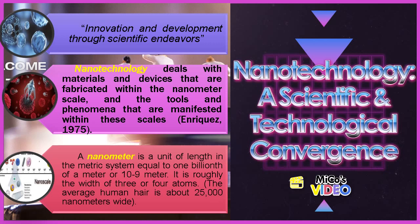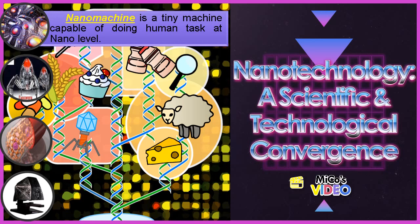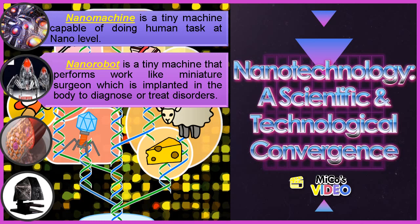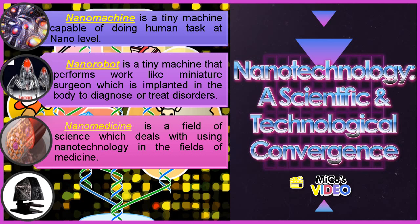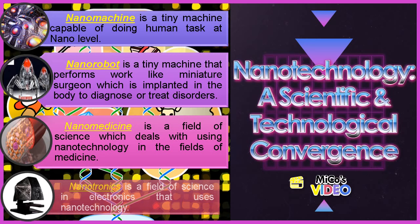Let's get familiarized with some technical terms about nanotechnology. First, a nanomachine is a tiny machine capable of doing human tasks at the nano level. Second, a nanorobot is a tiny machine that performs work like a miniature surgeon, implanted in the body to diagnose or treat disorders. Third, nanomedicine is a field of science which deals with using nanotechnology in the field of medicine. And lastly, nanotronics is a field of science in electronics that uses nanotechnology.